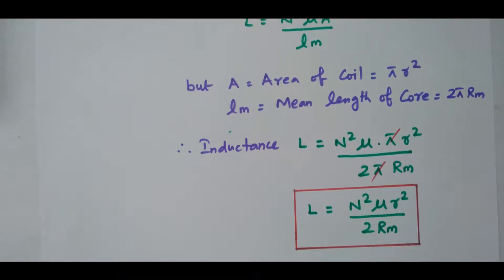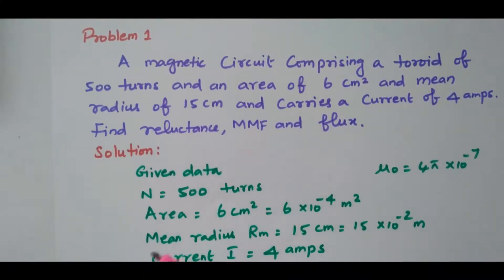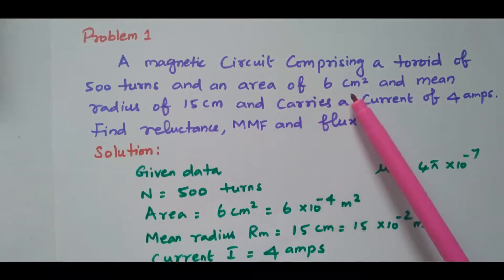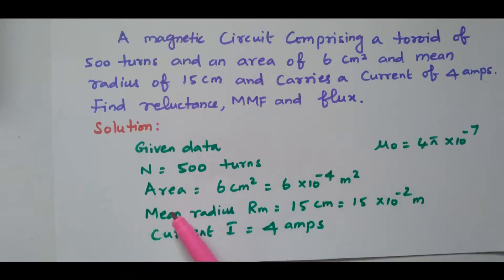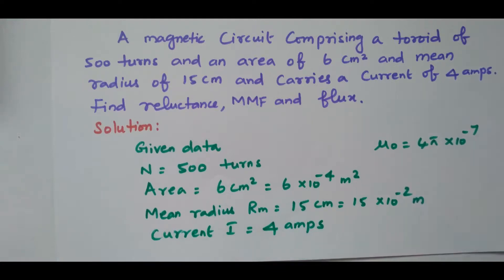We have obtained the expressions for inductance of solenoid and inductance of toroid. Now we will see the problems. Problem one: a magnetic circuit comprising a toroid of 500 turns, area of 6 cm squared, mean radius 15 cm, carries a current of 4 ampere. Number of turns N = 500, area A = 6×10⁻⁴ m squared, mean radius Rm = 15×10⁻² m, current i = 4 A, and μ₀ = 4π×10⁻⁷. We need to calculate reluctance, MMF, and flux.